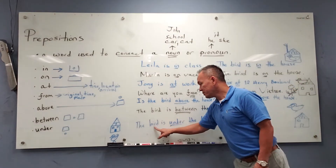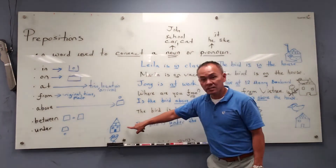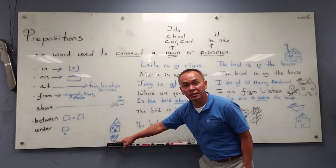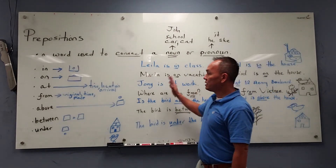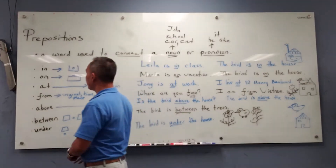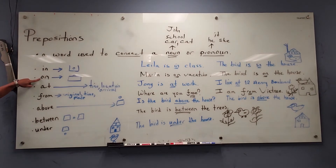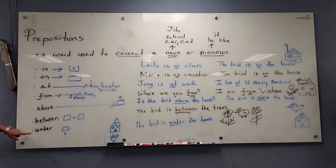The bird is under the house. This is the house. Where's the bird? Under — under the house. So these are called prepositions: in, on, at, from, above, between, and under.